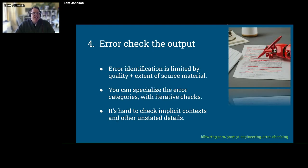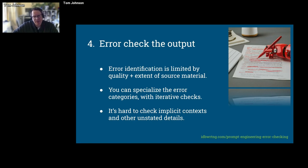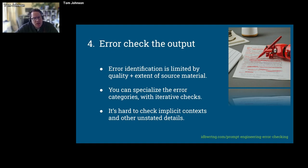The fourth step: once you have output and you've gone through section by section, you can try some error checking. This step involves asking the AI to check the draft output against all the source material. Amazingly, in my experience, it catches errors here and there — especially if you go section by section and say: for this section, I want you to check the accuracy of this content by looking at the source material. You can also specialize the error checking — maybe check for grammar errors, product names, code samples, or other specific things. When you do those specialized error checks, the quality is a lot better.